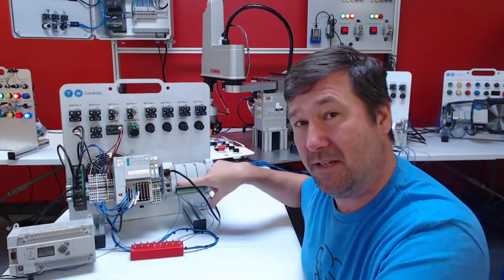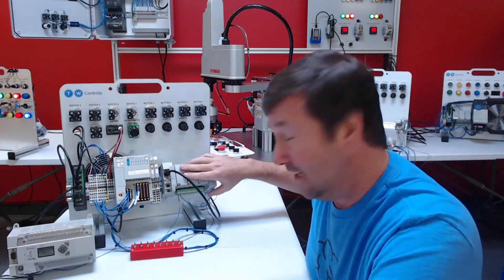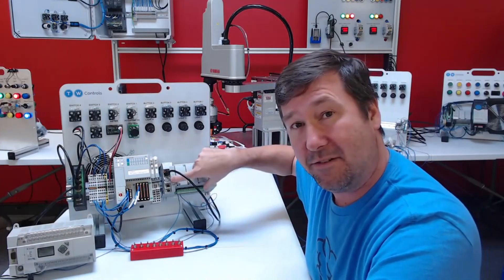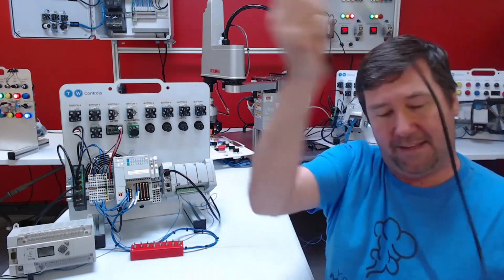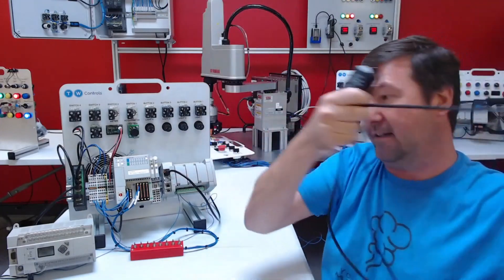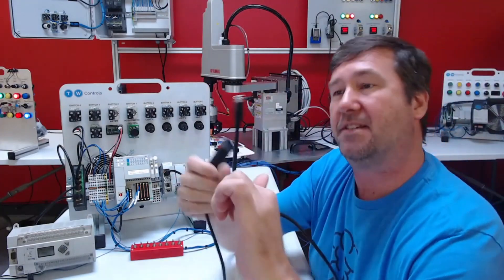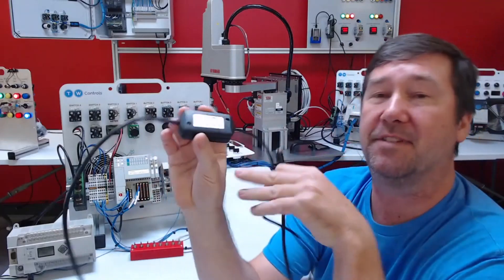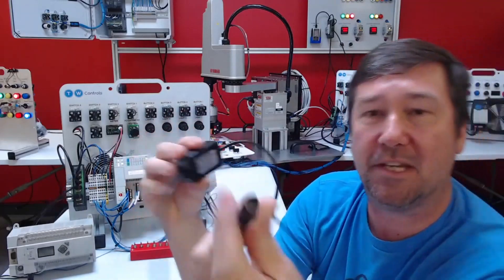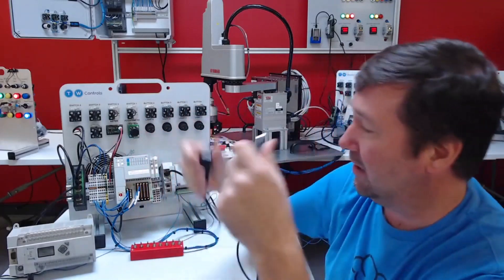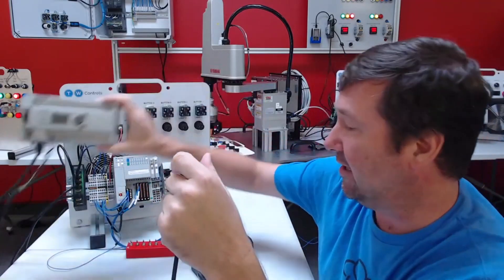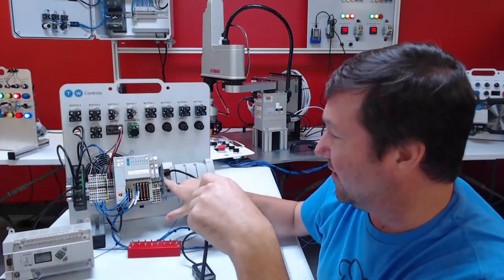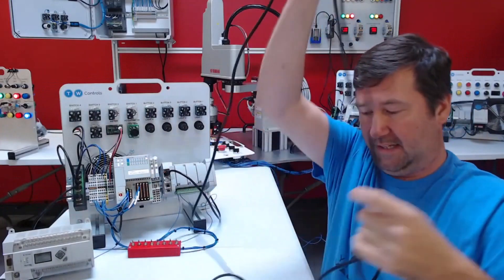So this is a Micro 850 PLC, it's a modern PLC. And you'll notice it's got a serial cable. Now it has the round connector. And that round one is going to be our 1747, I'm sorry a 1761-CBL-PM02. That's going to be the round one. You're going to find it on a lot of your Micrologix PLCs and you'll also find it on many of your modern PLCs.